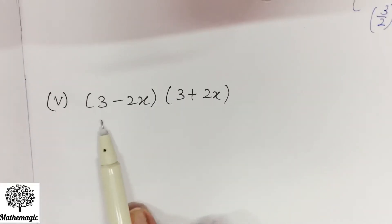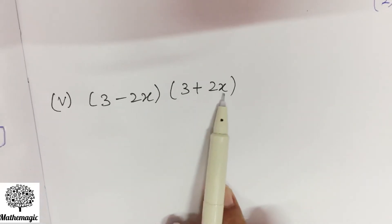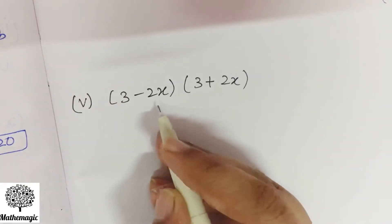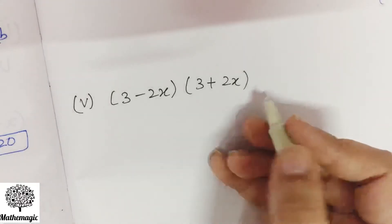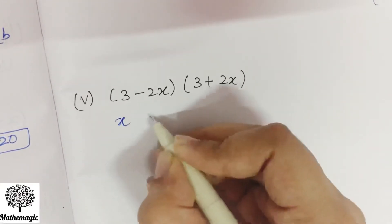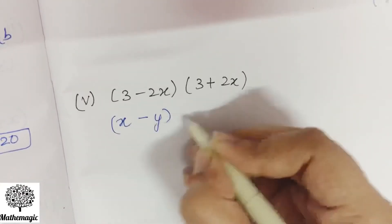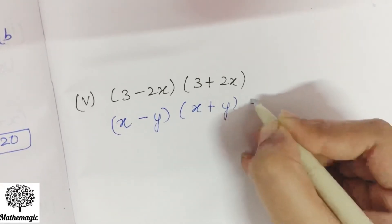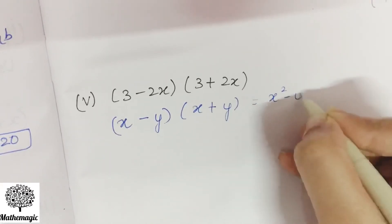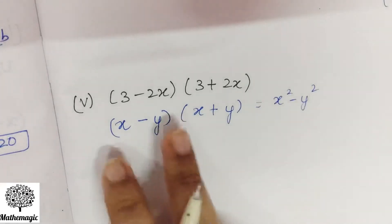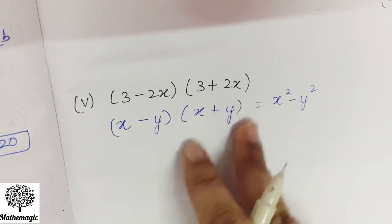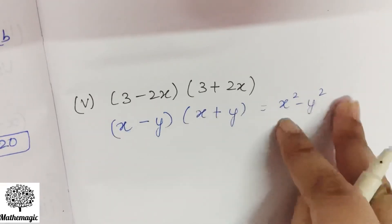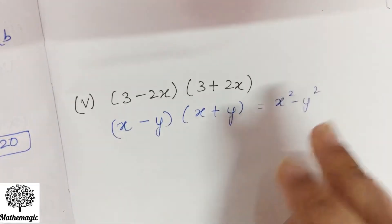Fifth part is 3 minus 2x into 3 plus 2x. Again, here we can use x minus y into x plus y. x minus y into x plus y — what do you think? It equals x square minus y square. It doesn't matter whether we write x minus y first or later. The identity gives x square minus y square.